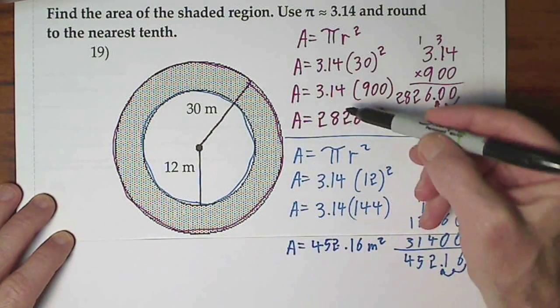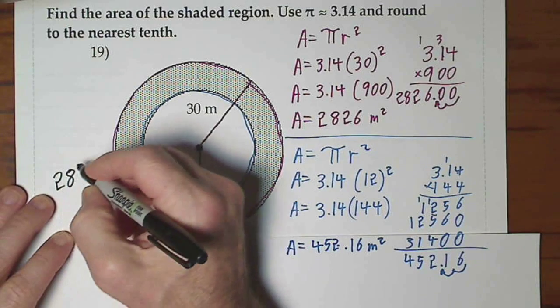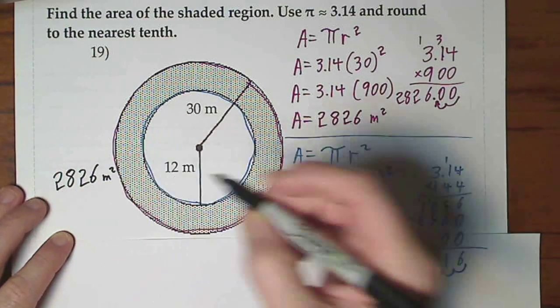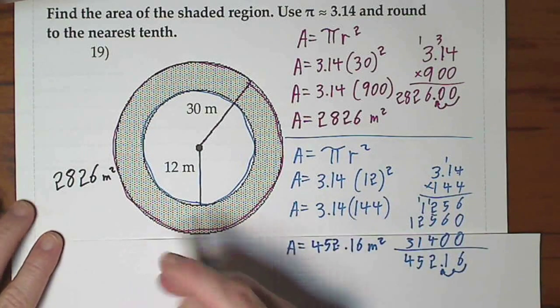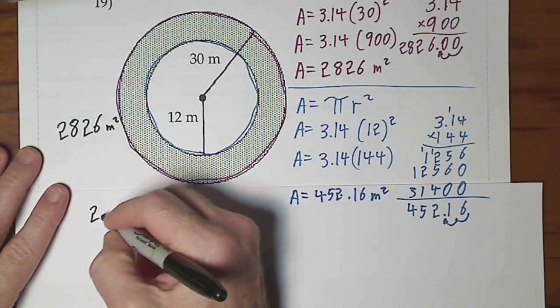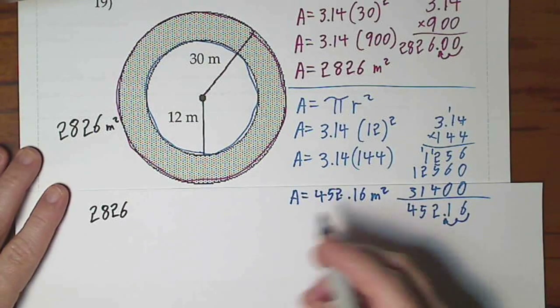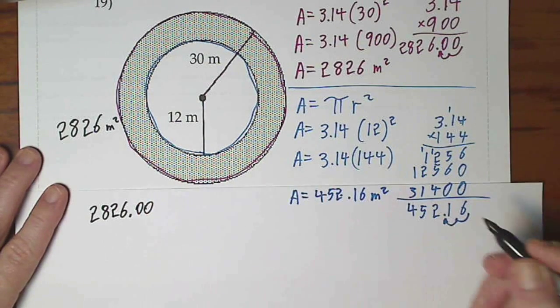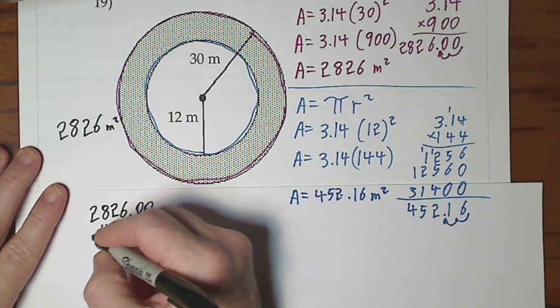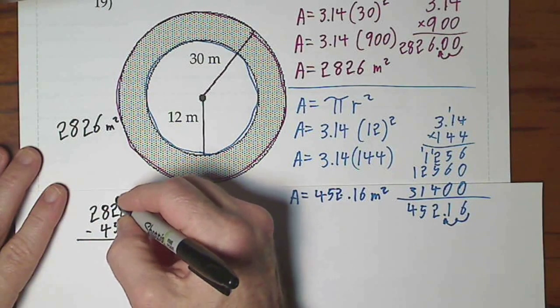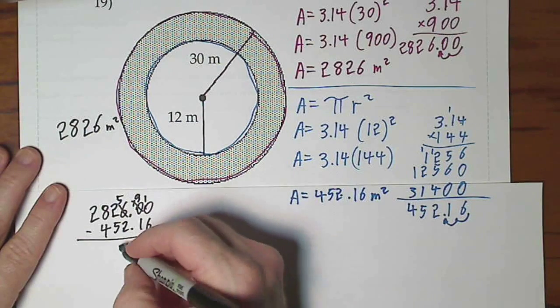So again, to find the shaded area, we take the area of the large circle. It's meters squared. And we subtract. I've got a decimal here. I think I want a little more room. I'm going to be subtracting to the hundreds place, so I'll need two zeros here. 452.16. So I've got to borrow.